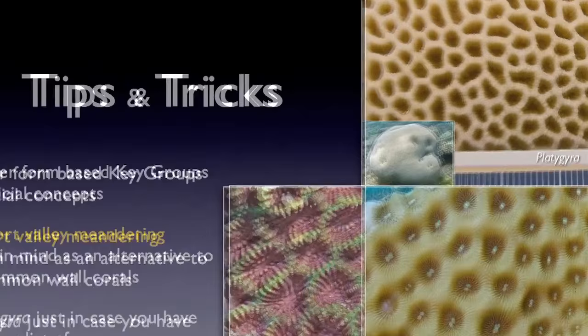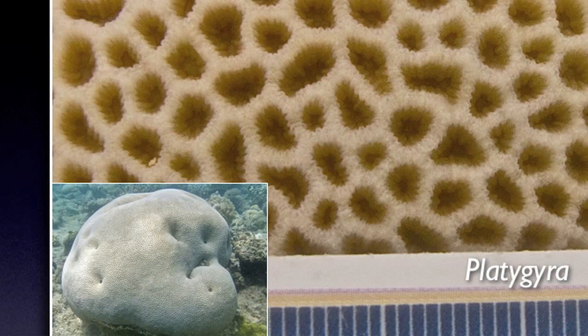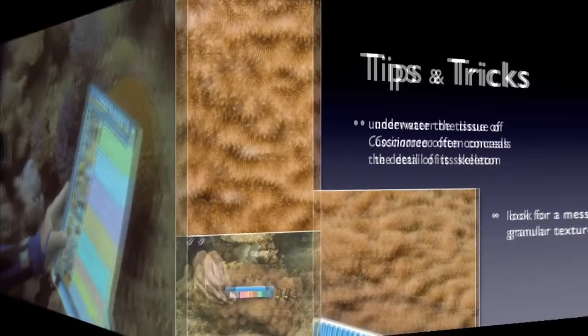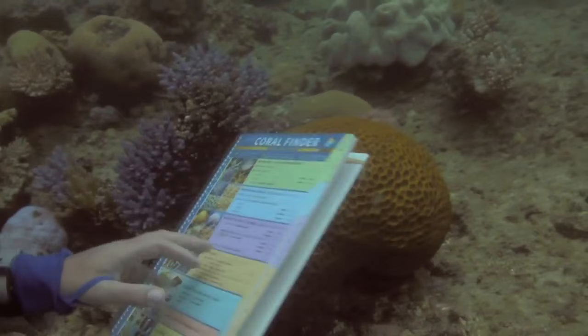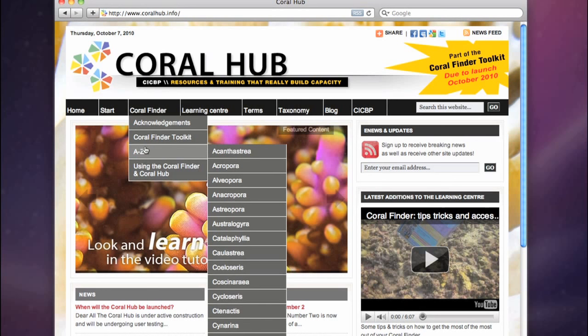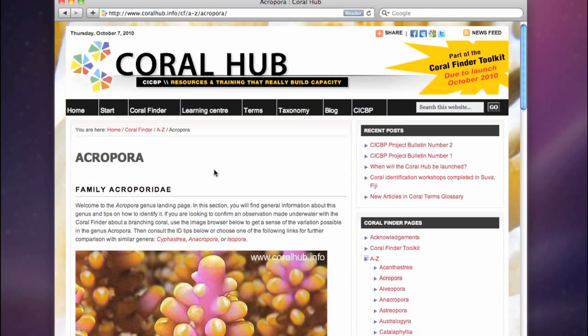The answer to most coral inquiries is in the coral finder somewhere. If you are not seeing the answer, you probably just need to think laterally. For example, the upper image is actually a meandering coral with very short meanders — on first glance, you might have been tempted to try the massive coral key group. The bottom line: until you learn the look of the genus Costinarea, you need to know the wall structure to confirm your identification. Waft water over the polyps carefully, encouraging them to withdraw, so as not to damage the animal's tissue. Now you have all the concepts needed to take on coral identification using the coral finder. You can use the coral hub's index pages to confirm your field IDs.